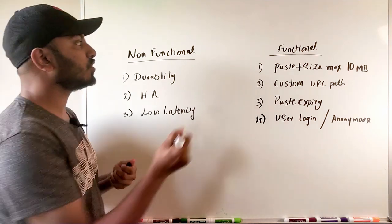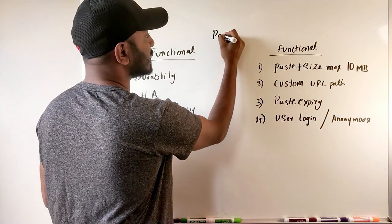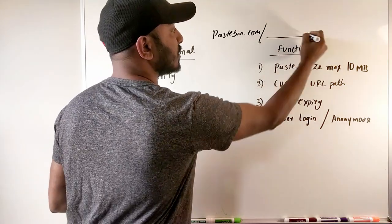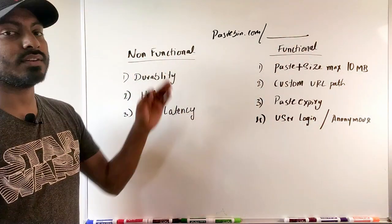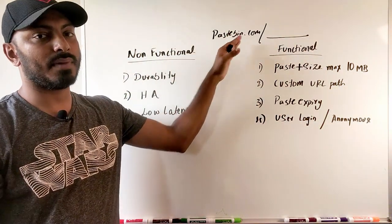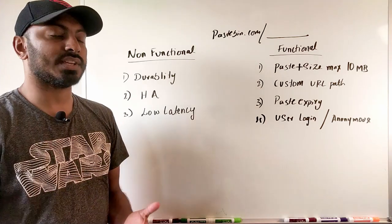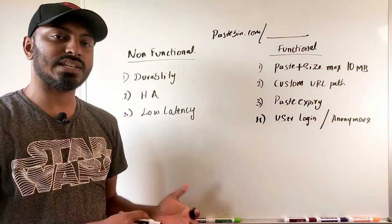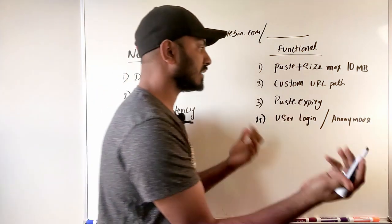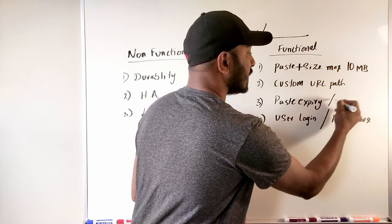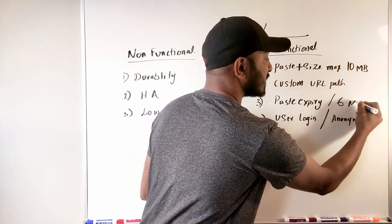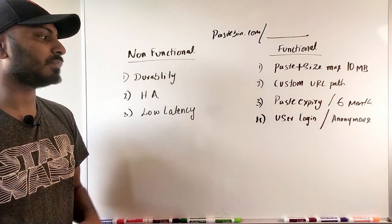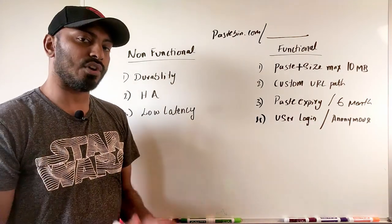For example, if you have a domain like pastebin.com, the user should be able to specify a custom path, and when the user visits that specific path, the same text should appear. The next requirement is paste expiry — by default, a paste should expire after six months, but users should be able to customize that as well.